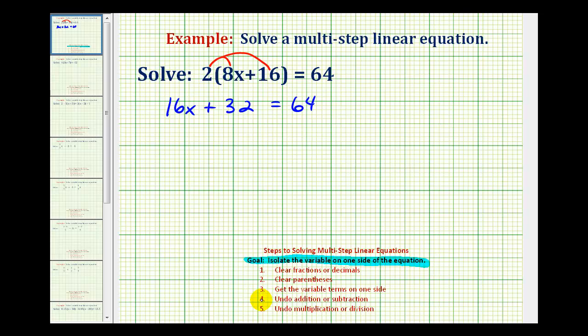But looking at our steps, we always want to undo the addition or subtraction first. So to undo plus 32, we'll perform the opposite operation to both sides of the equation. Well, the opposite of plus 32 would be minus 32, so we'll subtract 32 on both sides of the equation.